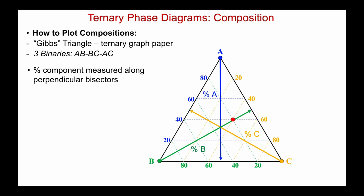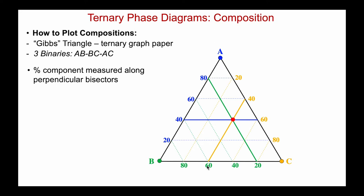Let's test if we are on top of this by looking at the composition shown in red. We see 40% A working down, then being careful for the perpendicular direction to C, 40% C, and the remainder 20% B. So this composition is 40% A, 20% B, 40% C — or A₀.₄ B₀.₂ C₀.₄.